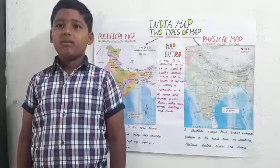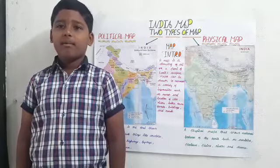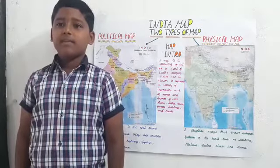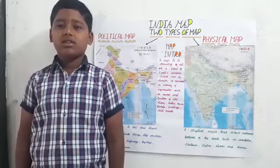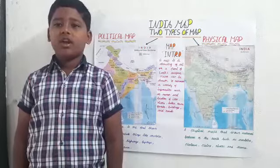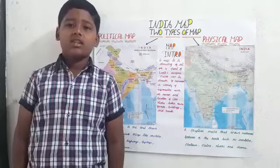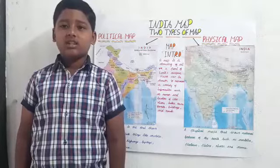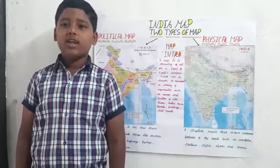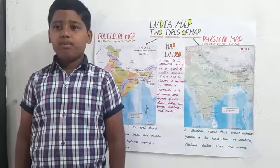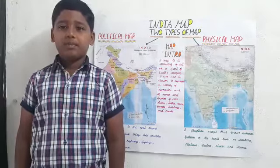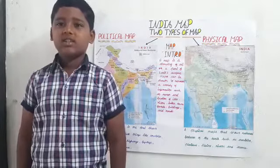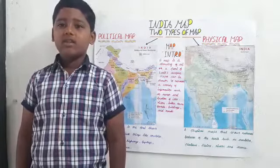A physical map shows natural features of the earth's surface such as mountains, plateaus, plains, rivers and oceans.